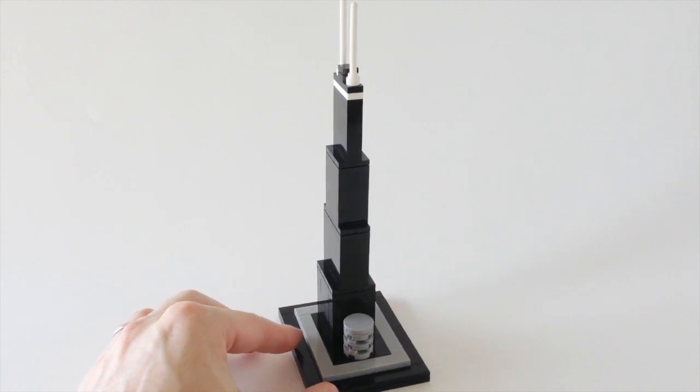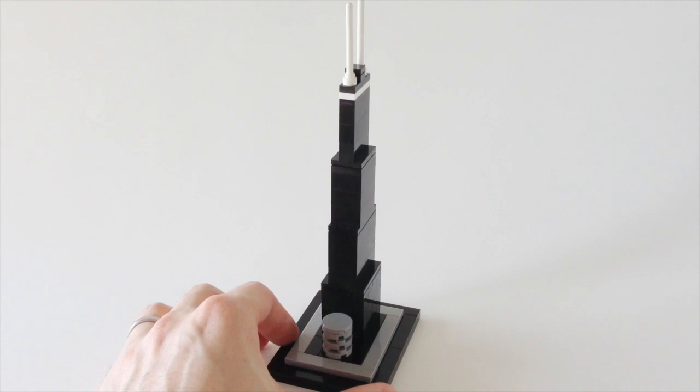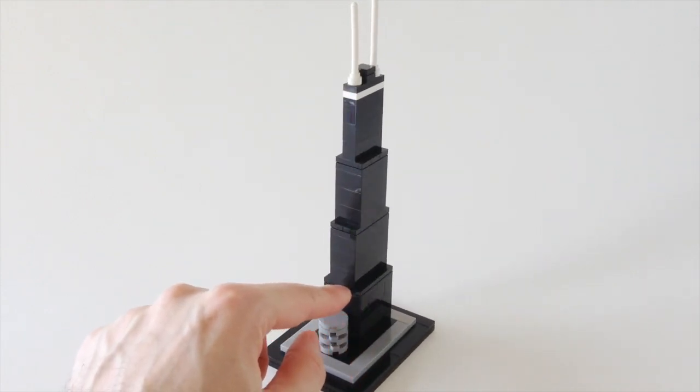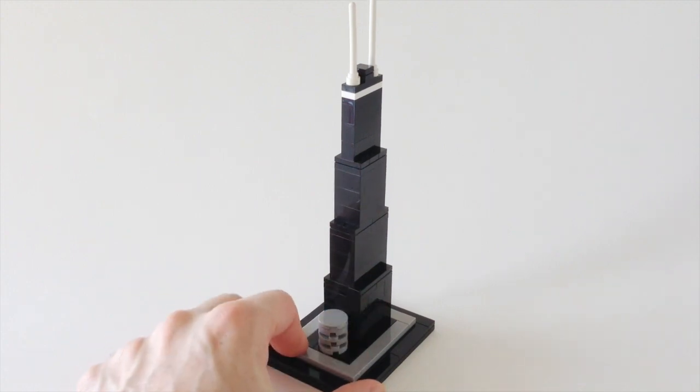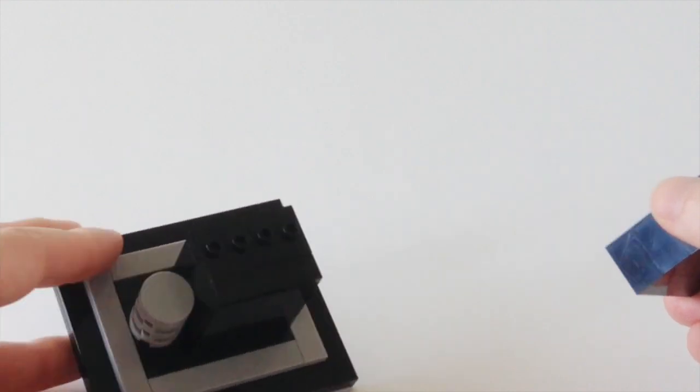It's a tapered building using some offsetting techniques. So all these black bricks go up to one level, then you have some jumper plates on here. Let me show you how one of those works. So there you have your jumper plates.